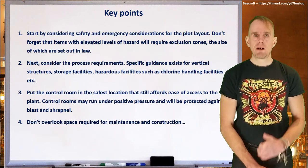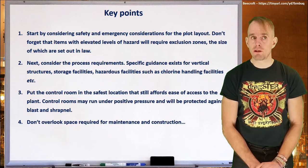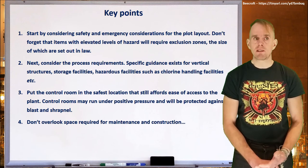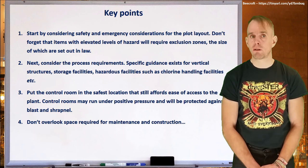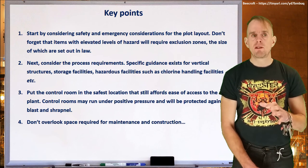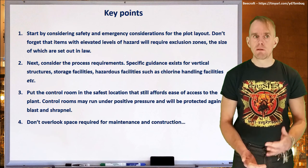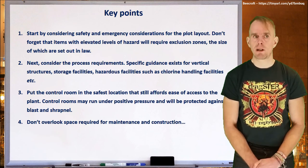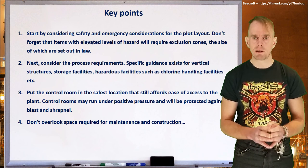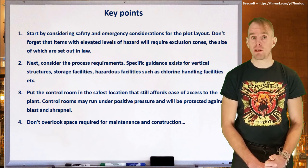To recap the key points: plot layout starts by considering safety and emergency considerations. Don't forget that items of elevated hazard will require exclusion zones, and the size of these is set out in law. Next, consider the process requirements — specific guidance exists for vertical structures, storage facilities, and hazardous facilities such as chlorine handling. Keep your operators safe by putting the control room in the safest location that still affords ease of access to the plant. You can protect control rooms by running them under positive pressure, protecting against blast, fire, and shrapnel — making them a safe refuge. And never forget to allow space required for maintenance and for construction.